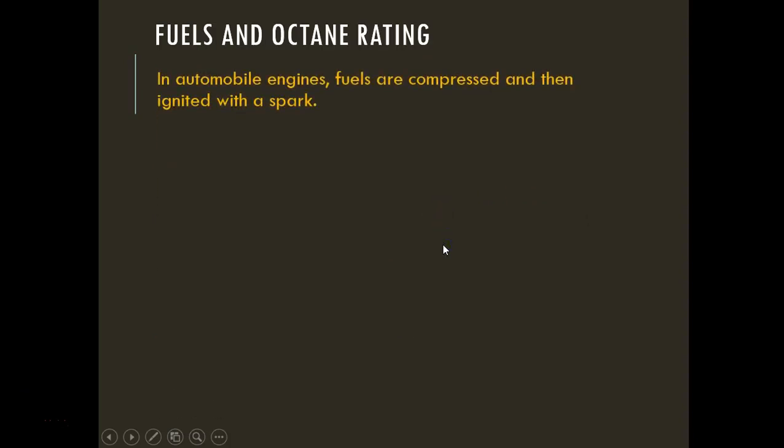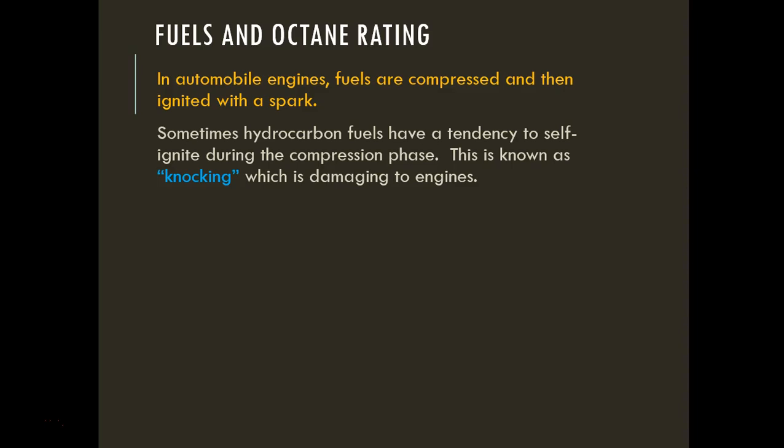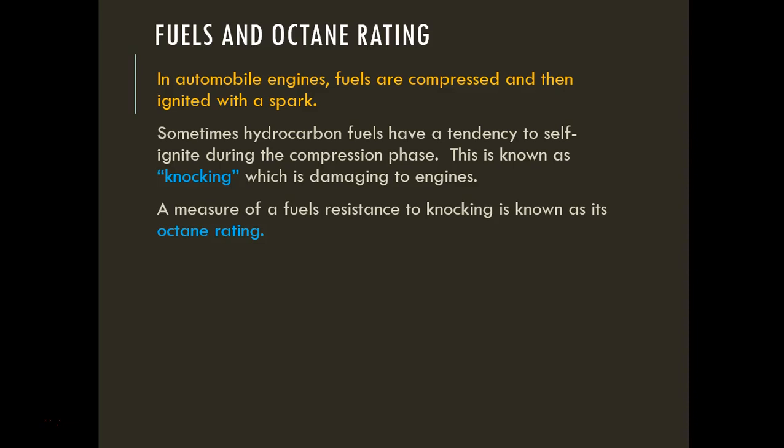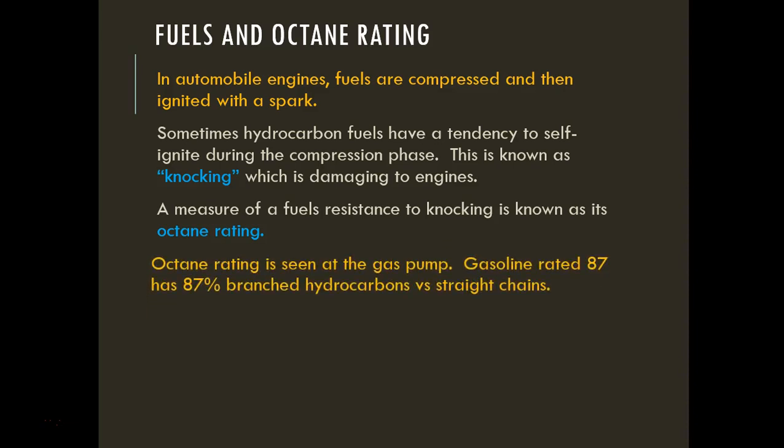In car engines, fuels are compressed in pistons and then ignited with a spark. Sometimes hydrocarbon fuels auto-ignite during the compression phase—this is called knocking, which damages engines by throwing all the pistons out of sync. A measure of a fuel's resistance to knocking is its octane rating. Gasoline rated at 87 contains 87% branched hydrocarbons versus straight-chain hydrocarbons.